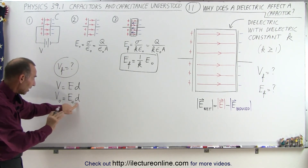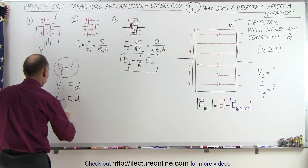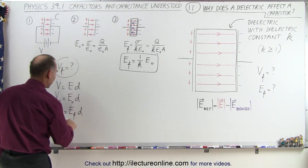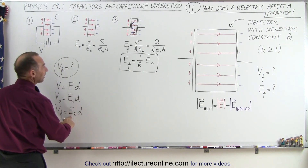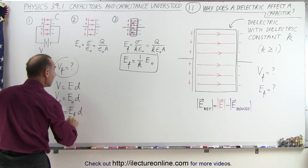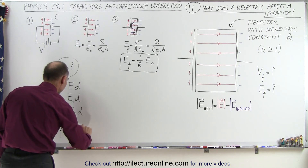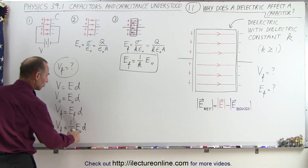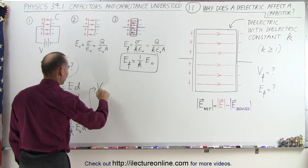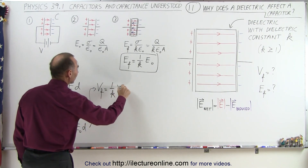The distance between the plates is not going to change, but the electric field is going to change. We can say that V_final must be equal to E_final times d, and E_final is one over k times E_initial. So V_final equals E_final times d, which is one over k times E_initial times d, and E_initial times d equals V_initial, which means that V_final is therefore equal to one over k times V_initial.